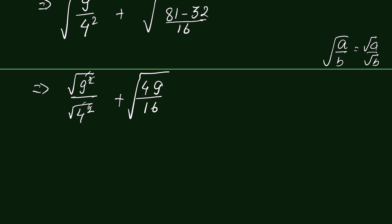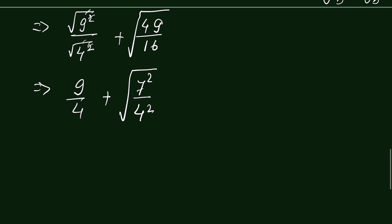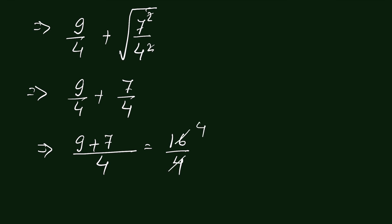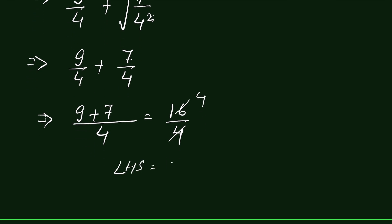We remove the square root: 9 upon 4 plus square root of (49/16). Writing 49 as 7² and 16 as 4², we get 9/4 plus 7/4. They have a common denominator, so 9 plus 7 is 16 upon 4, which equals 4. Therefore LHS equals RHS, and x equals 81/16 is confirmed as our answer.